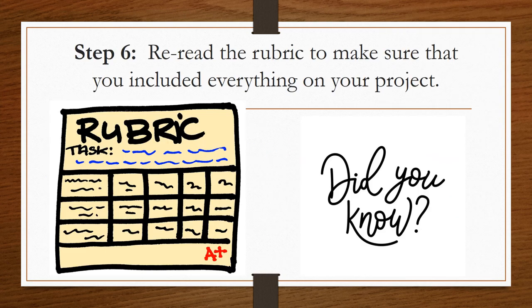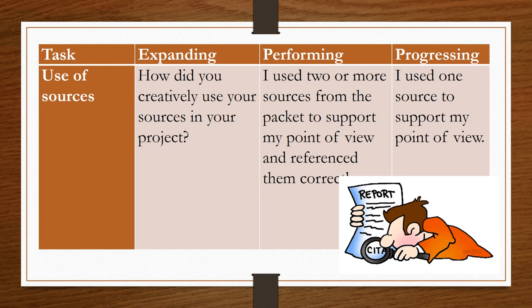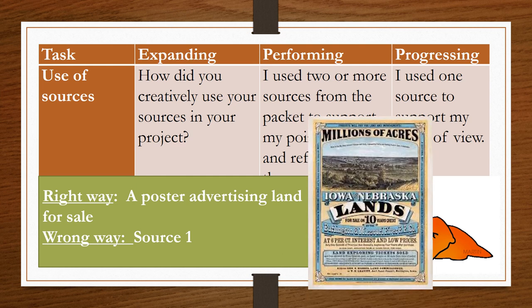Step six: reread the rubric to make sure that you included everything on your project. The first area we will be grading is the use of sources. We're going to ask you in our conference: how did you creatively use your sources in your project? If you're performing, you will have used two or more sources from the packet to support your point of view and referenced them correctly. Remember how to cite your sources — the right way is to write what the source actually is, for example 'a poster advertising land for sale.' The wrong way is to write 'source one' — call it by its name.